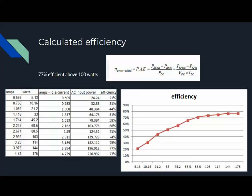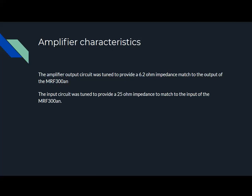And the calculated efficiency, I saw that the efficiency rose and hung around the 77% level as you approached over 100 watts. And the input impedance was around 25 ohms to match with the balun that I built, and the output impedance of the MOSFET was around 6.2 ohms.